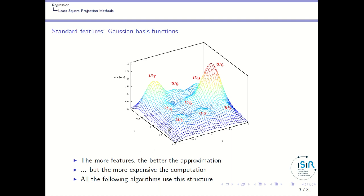The more features you take, the more expensive the computation, because you have to use matrices where you have the number of weights in the number of rows and columns, and you will need to invert those matrices. All the following algorithms use this structure where you have a set of basis functions, a set of weights, and the function you want to approximate is a linear combination of the weights times the basis functions.